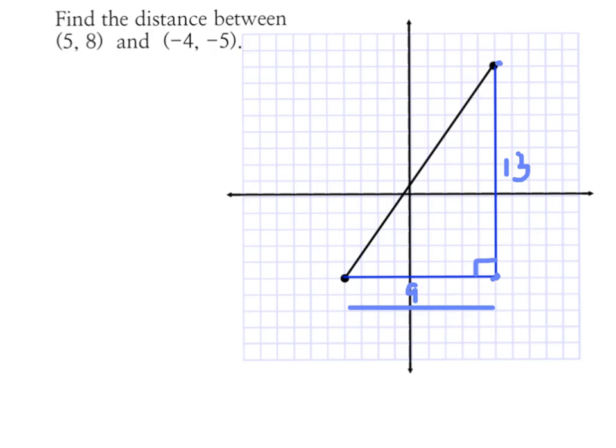Once we've got that done, we can go ahead and plug our information into our Pythagorean theorem and solve. So I'm going to fill in my information. I know that my legs are 9 units and 13 units, so that will say 9² + 13² = c², remembering that c is always our hypotenuse, the one across from the right angle.